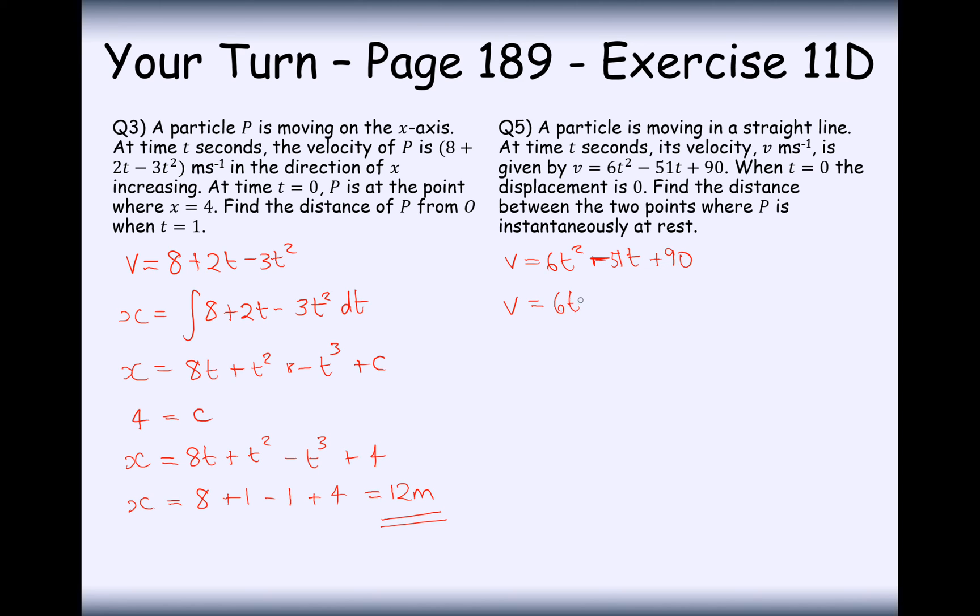Whenever P is at rest, the velocity is equal to 0. So 6t squared minus 51t plus 90 will equal 0. I can see that all of them are factors of 3, so I'll factor out the 3 first. This is 2t squared minus 17t plus 30 equals 0. Let's factorize this. It's going to be 2t and t. It could be 15 and 2. No, it's not 15 and 2. Let's try 10 and 3. No, 6 and 5. Yes, so let's put a minus 6 here and a minus 5 here. That will give us minus 12t minus another 5t. That's minus 17t. Great. We've got t equals 2.5 and t equals 6.